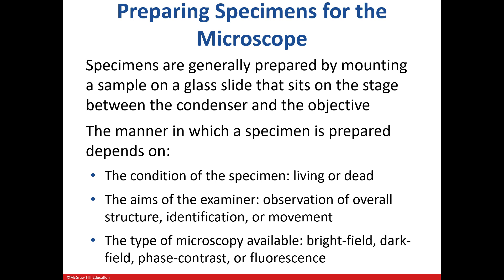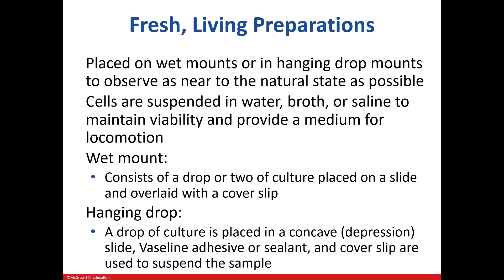We talked about how to visualize them, but how are the slides prepared? It all depends on what we are trying to observe — is it alive or dead? What are we trying to look at? And what types of microscopes do we have available? Live organisms are prepared using wet mounts or hanging drop mounts. In a wet mount, a drop of the culture is placed on a slide and a cover slip is placed on it. In a hanging drop method, the sample is placed in a well and a sealant is used to place the cover slip over the culture, and the sample is suspended.